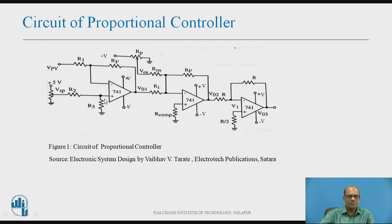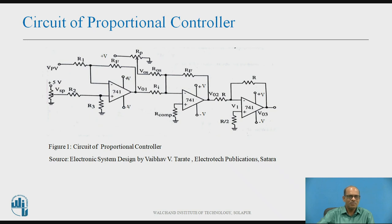This first operational amplifier circuit is a difference amplifier, and the inputs are phi_PV — this is the process variable, that is, the voltage proportional to the process variable. This voltage proportional to the process variable is obtained by using a transducer, bridge, and instrumentation amplifier. The output of the instrumentation amplifier is a voltage proportional to the physical parameter to be measured. This is phi_PV.